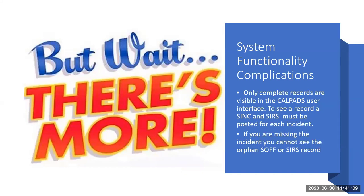There's something else to consider: system functionality complications. There are restrictions in how we submit incident records based on design functionality. Only complete records are visible in the CalPADS user interface. So we have orphaned SIRS and SOF records, but we can't see them because the SYNC is missing. To see a record, the SYNC and SIRS must both be posted. We deleted the SYNC, we have a SIRS, but we can't see it without the SYNC in the student detail screen. That makes it a little difficult, which is why we're demonstrating how to resolve this error.